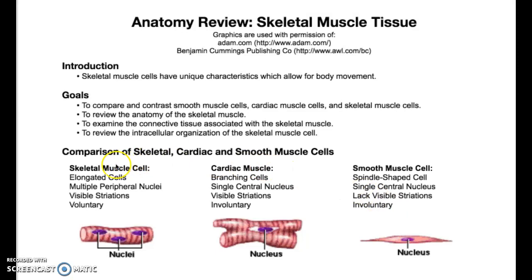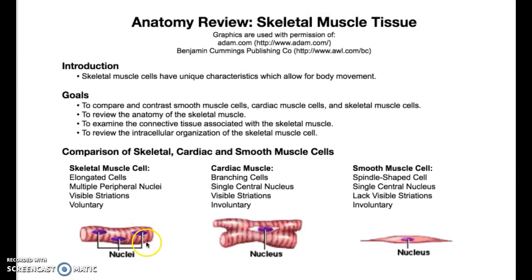Skeletal muscle has these long parallel muscle cells or muscle fibers, many nuclei, visible striations — these stripes are called striations — and they're voluntary. We have to tell skeletal muscle what it's going to do.